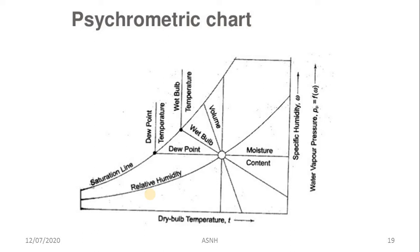The psychrometric chart contains various lines. On the x-axis there is always dry bulb temperature, and on the y-axis there is specific humidity (humidity ratio). Horizontal lines indicate dew point, vertical lines indicate dry bulb temperature, relative humidity lines are curved, volume lines are inclined, and the outermost curved line is the saturation line where relative humidity is 100%.